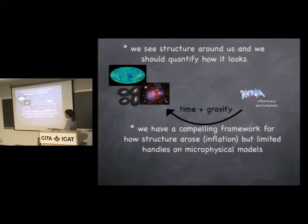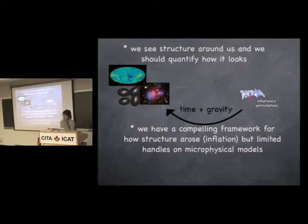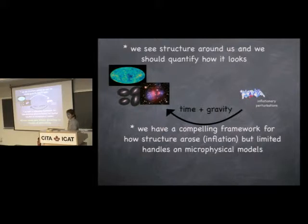We have limited information about what this period of inflation was, so it's important to use as many observables as we can find. Further, there are qualitatively different types of inflationary models — classes that give rise to different predictions for what the statistics of these perturbations are. So a goal should be to use all of this data to try to learn what we can about inflation.